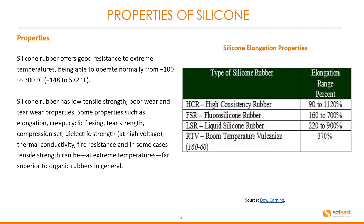Let's have a look at some of the properties of silicone. Silicone rubber offers good resistance to extreme temperatures, being able to operate normally from minus 100 to 300 degrees centigrade. Silicone rubber has low tensile strength and poor wear and tear properties. However, some properties — such as elongation, creep, cyclic flexing, tear strength, compression set, dielectric strength at high voltage, thermal conductivity, fire resistance, and in some cases tensile strength — can be far superior to organic rubbers in general at extreme temperatures.